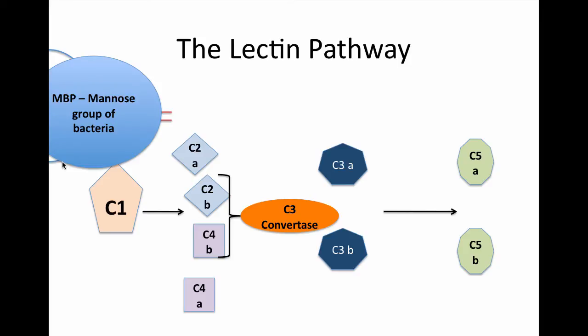Mannose group is a glycoprotein group on the surface of bacteria, and our body produces mannose binding protein to bind to it. When these two bind, they activate the lectin pathway.